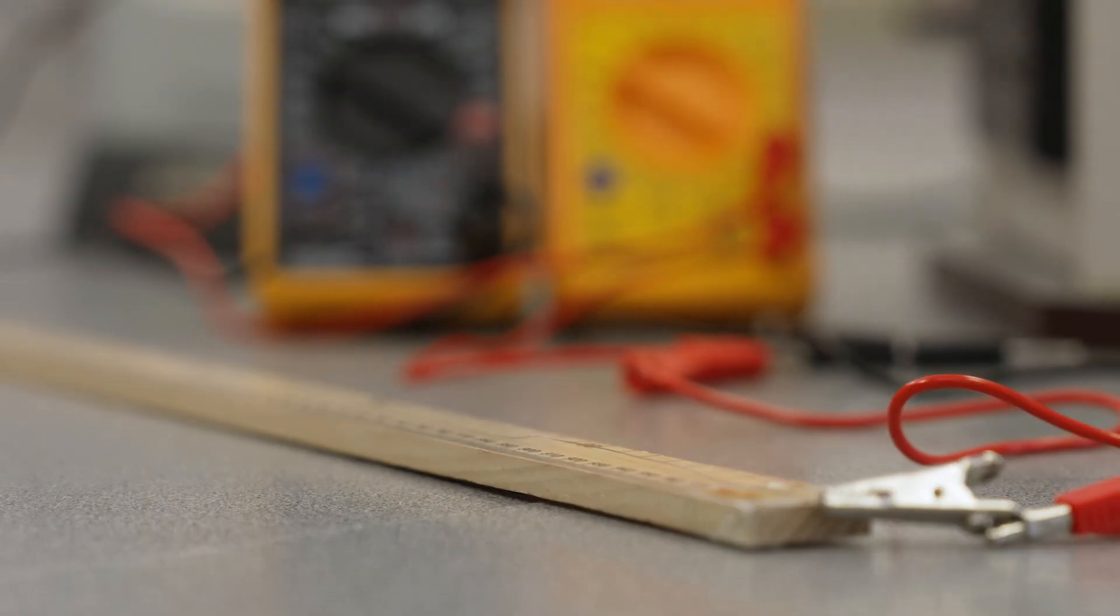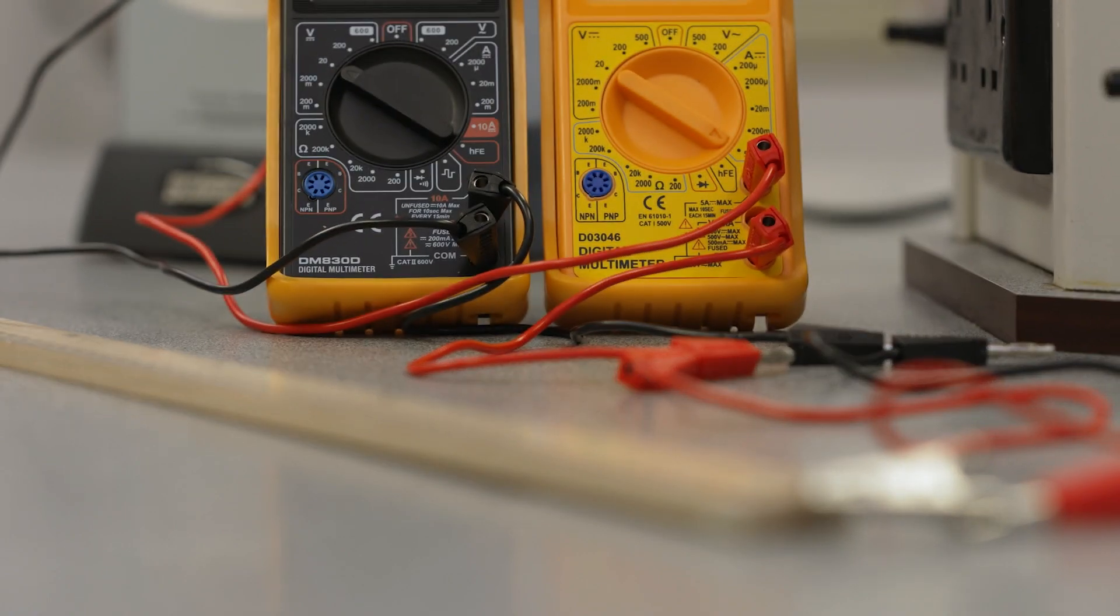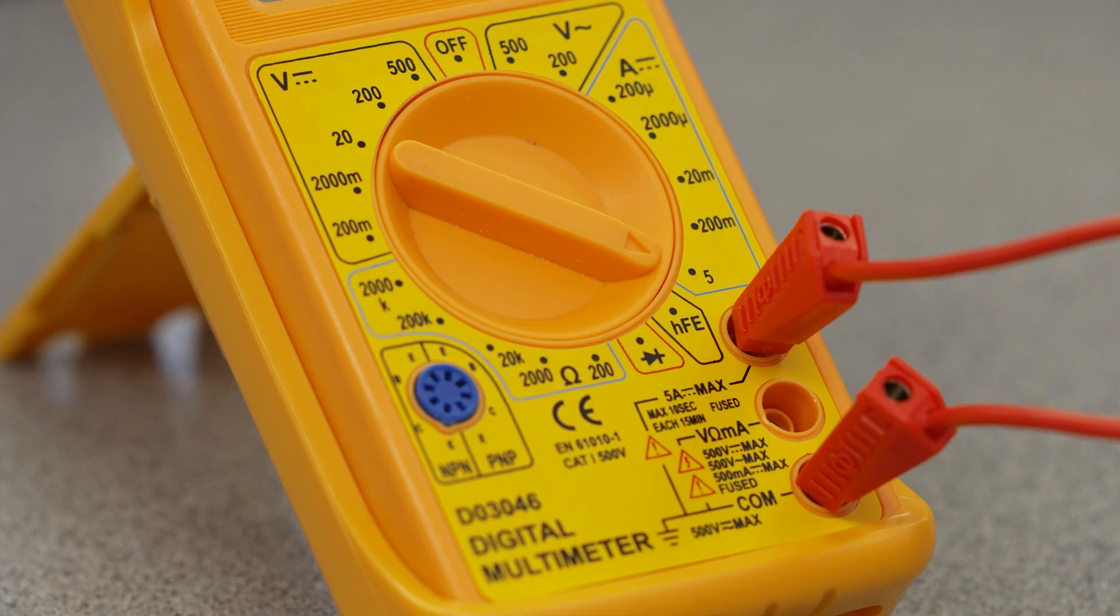To use the multimeter as an ammeter, select DC current and connect the 4mm leads to the V and COM input.